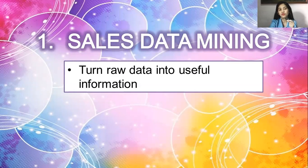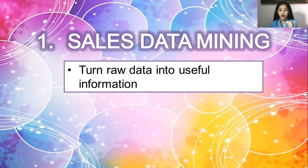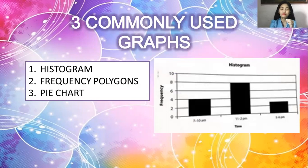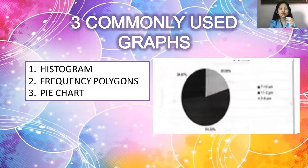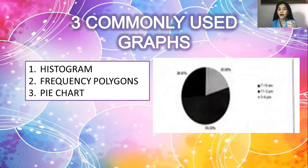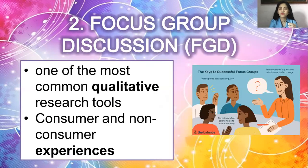When we say sales data mining, you will turn raw data into useful information. This is one type of quantitative research wherein you collect numerical data — more on numbers — and convert it into a graph or any graphic organizer. The three commonly used graphs for sales data mining are the histogram, frequency polygons, and pie chart. Last time I gave you data on hot dog sales and you had to find which age group consumed hot dogs the most within that data.